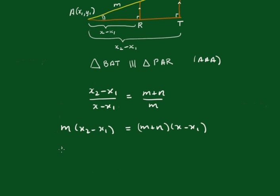So it becomes mx2 - mx1 = mx - mx1 + nx - nx1. And we can see that we can cancel these ones here. They go out. And what I'll do, I'll take this across this side, so I'll have mx2 + nx1.